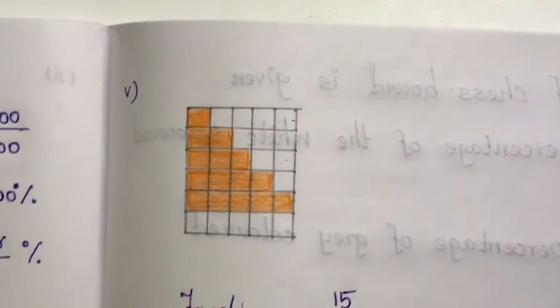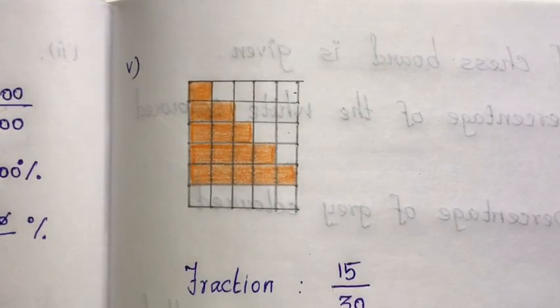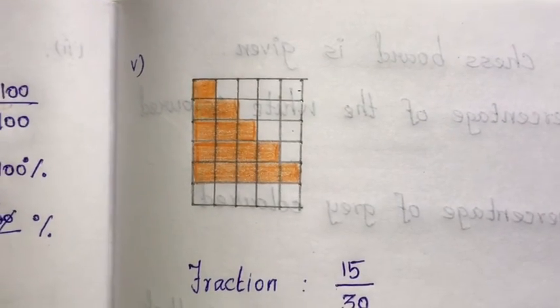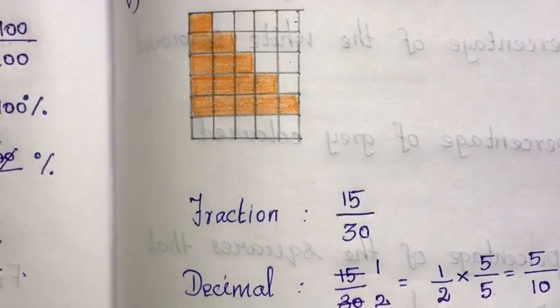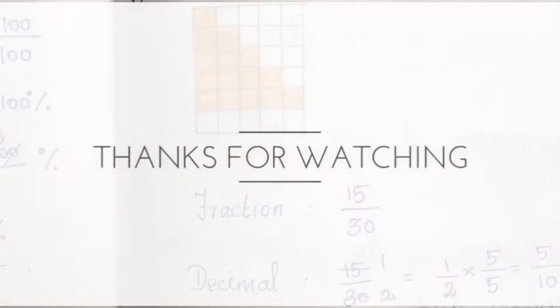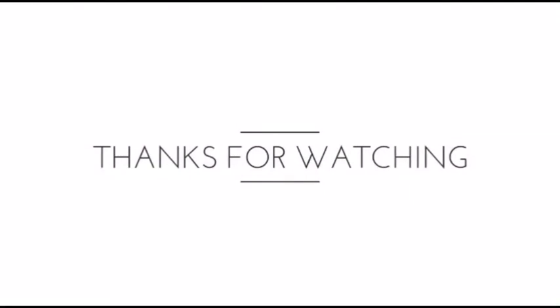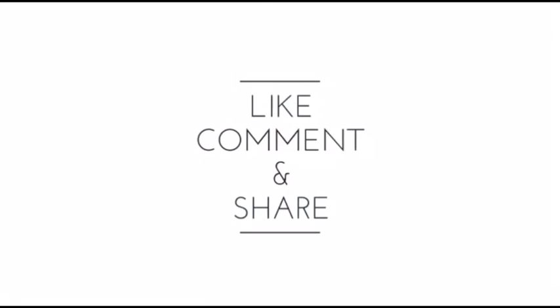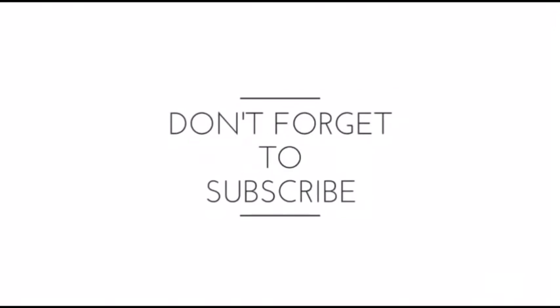So in summary: fraction form is 15 by 30, decimal form is 0.5, and percentage is 50%. You can check the comment section to solve it. Thank you.